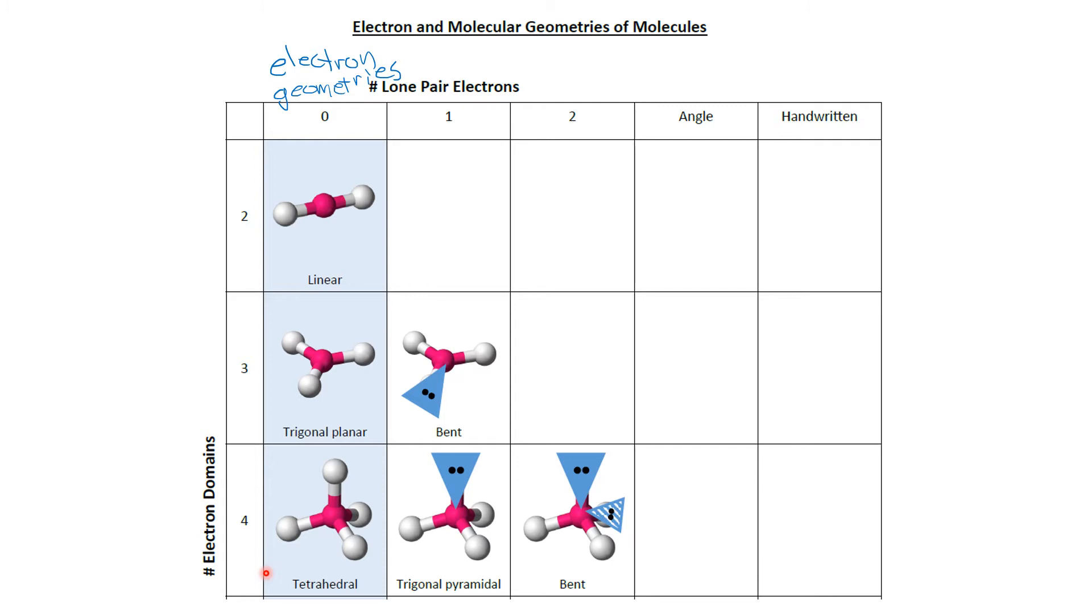For the three and four domain cases, it's also possible that one of those domains or more could be a lone pair, and we don't really see lone pairs. What we see when we try to look at the shapes of molecules is the positions of the atoms, the parts that have the biggest mass.